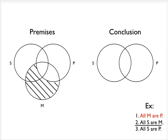So let's try the second premise. All S are M. So here what we want to do is we want to block out anything that is in the S category that's not in the M category.